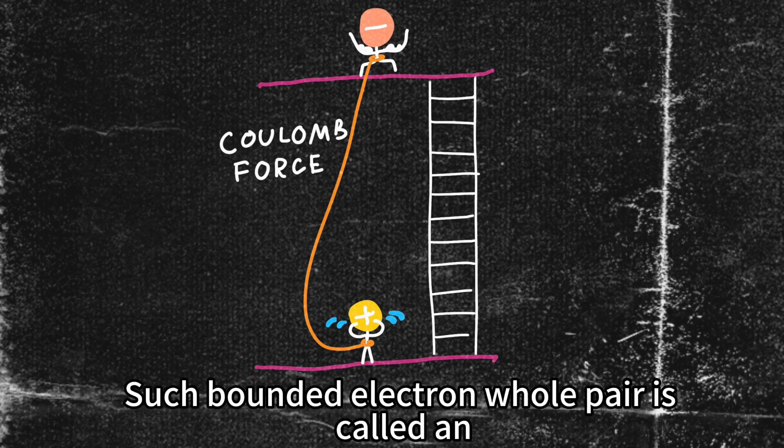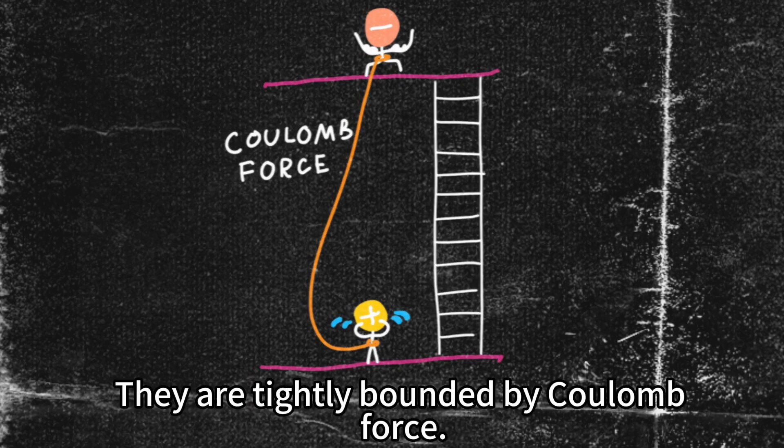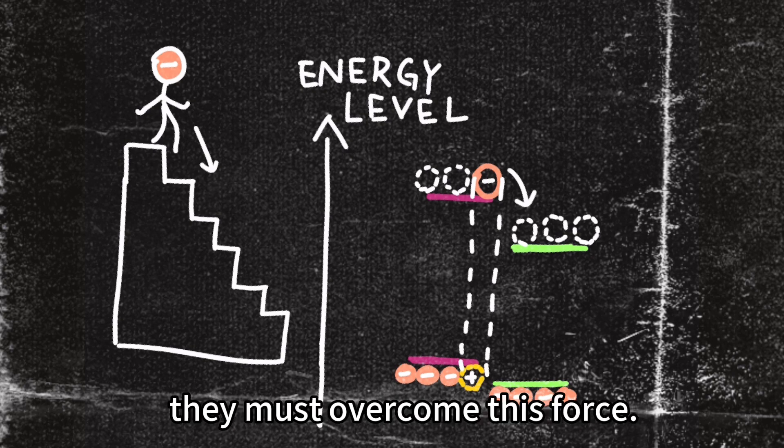Such bounded electron hole pair is called an exciton. They are tightly bonded by coulomb force. To unlock their potential, they must overcome this force.